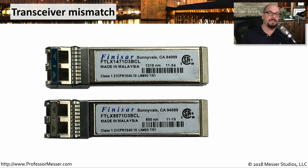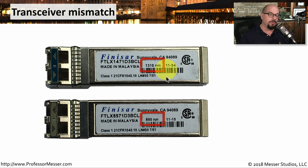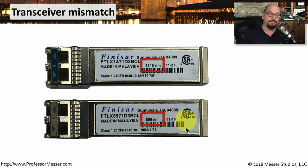This is an easy mistake to make because transceivers all look very similar to each other — they have exactly the same format and the same connectors on the end. But if you look closely at two transceivers, you'll notice one is designed for a 1310 nanometer connection and the other is designed for 850 nanometer.